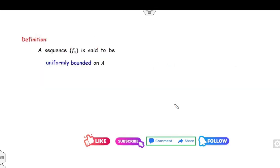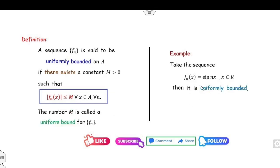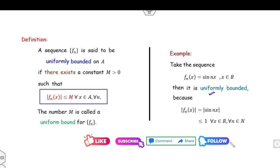Before the main result, what is the definition of uniform boundedness? A sequence of functions is said to be uniformly bounded if there exists a positive real constant M such that |fn(x)| ≤ M for all x in the domain. For example, fn(x) = sin(nx) is uniformly bounded because |sin(nx)| ≤ 1 for all x in ℝ, so M = 1.